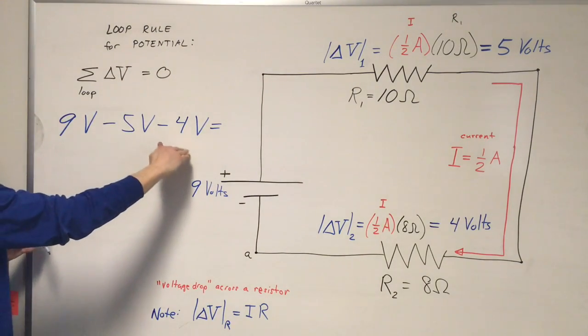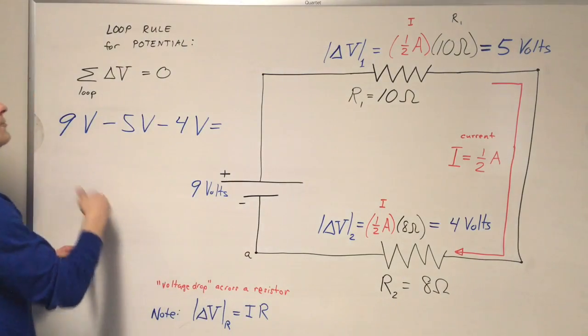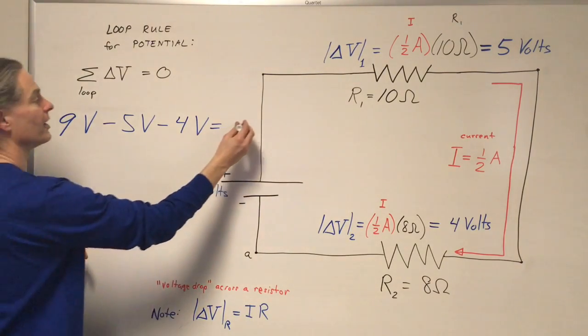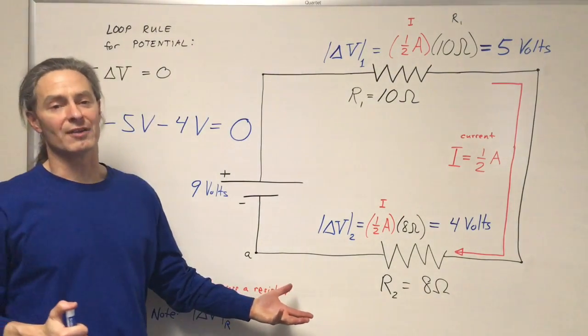Those are all the changes in potential going around the circuit, starting here, ending here. They should all combine to give zero, and they do. This is a highly contrived example.